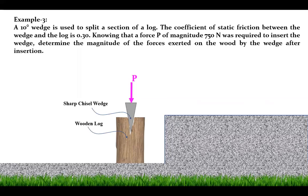Reading the problem again: this is a sharp chisel wedge with a 10-degree angle. The coefficient of friction between the two surfaces — the wedge and the log — is 0.3. A force P of magnitude 750 newtons is necessary to split the wooden log. We need to determine the magnitude of forces exerted by the insertion of the wedge on the log.